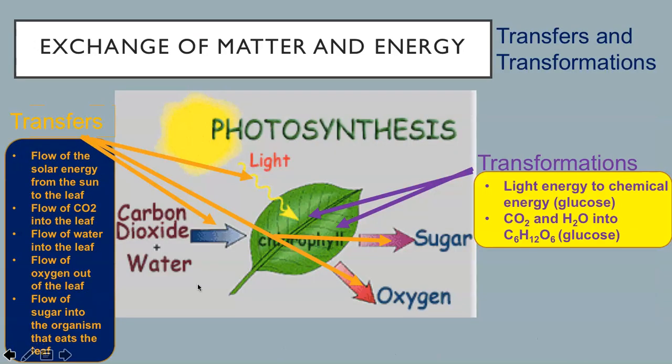You will be exposed to many models of systems and will need to identify both transfers and transformations in and out of and within systems. For example, look at this simplified model of photosynthesis. The transfers or flows include flow of solar energy from the sun to the leaf, flow of carbon dioxide into the leaf, flow of water into the leaf, flow of oxygen out of the leaf, and flow of sugar into the organism that eats the leaf. Notice that in each of these examples there is only a movement of location. There is no change of state. The transformations include light energy changing into chemical energy or glucose and carbon dioxide and water changing into glucose. Stop the movie and make sure you understand how each of these events is either a transfer or a transformation.